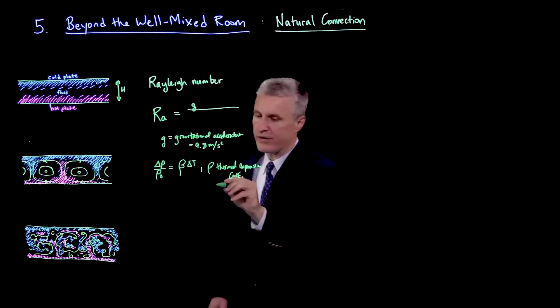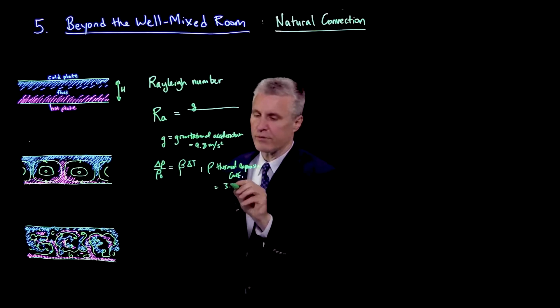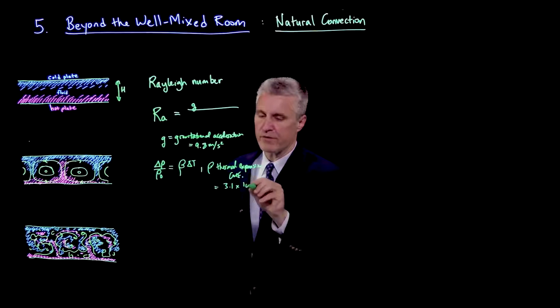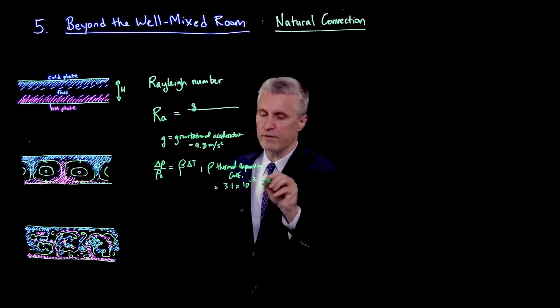Beta is the thermal expansion coefficient. And this, for air, is something like 3.1 times 10 to the minus 3 inverse Kelvins.